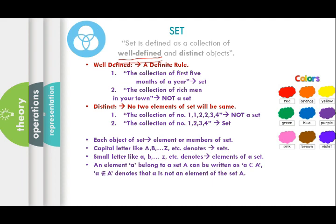The collection of rich men in your town is not a set. The second property is distinct — set objects must be distinct, meaning no two elements of a set will be the same. For example, the collection {1, 1, 2, 2, 3, 3, 4} is not a set because 1 is repeated twice and 2 is repeated. Each and every element should appear only once. Instead, the collection {1, 2, 3, 4} will be called a set.